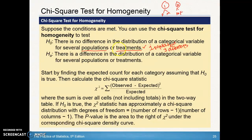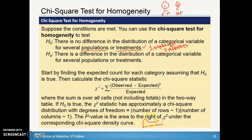The null hypothesis is that there is no difference in the distribution of a categorical variable for several populations or treatments. Start by finding your expected counts — get those from your graphing calculator. You'll need to show observed minus expected squared divided by expected for two of the components. Degrees of freedom is the number of rows minus one times the number of columns minus one. The p-value is always the area to the right of your chi-square statistic, so when you write the probability, you always write the probability that chi-square is greater than your statistic.